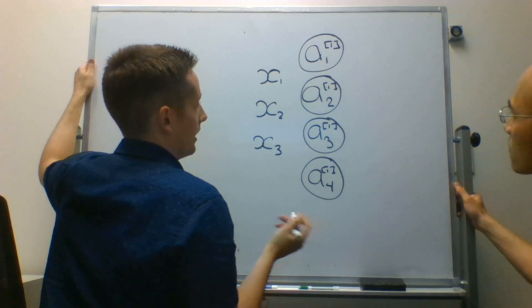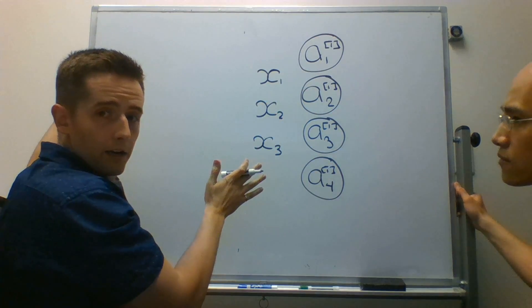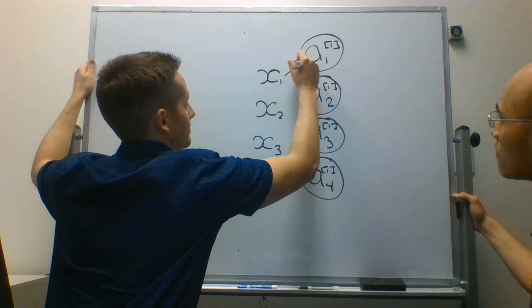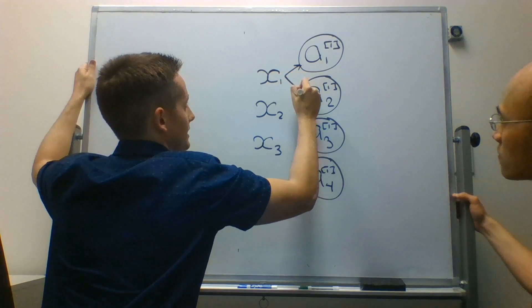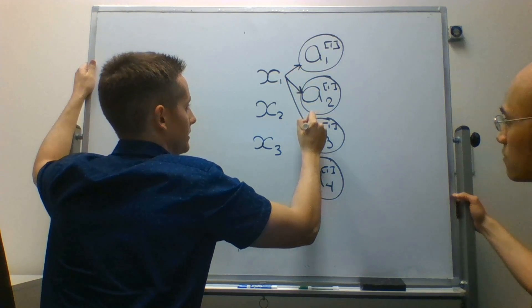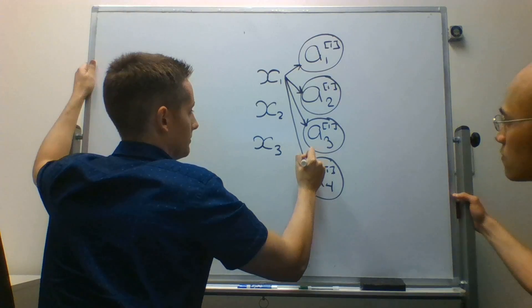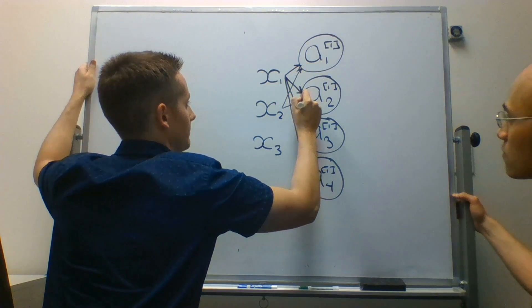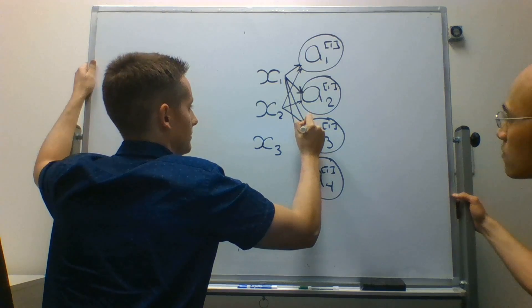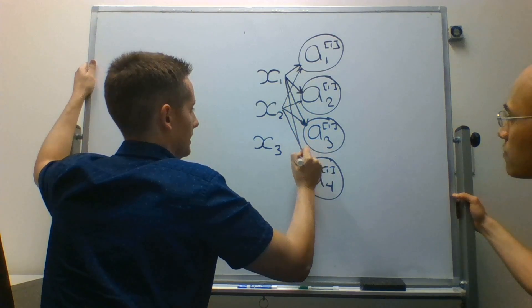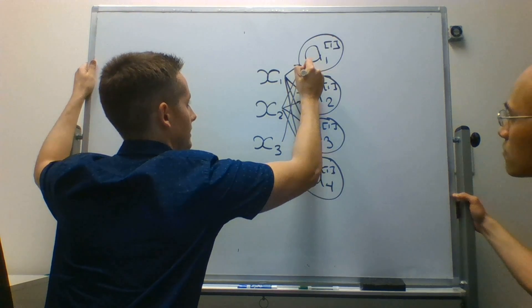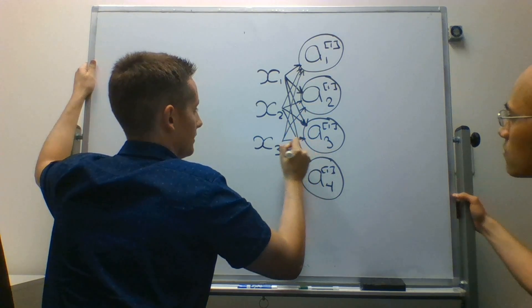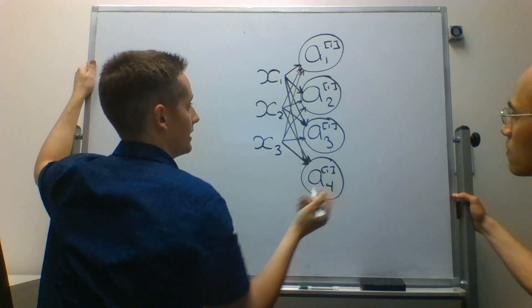For each neuron that we have, we are going to pass in every single input. So x1 is going to be connected to every single individual neuron. x2 is going to be connected to every single neuron. And x3, again, connected to all the neurons. So these lines start to overlap and look a little funny, but I think you understand the idea here.